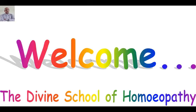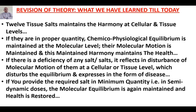Up till now we have finished 9 remedies from the 12 tissues. We have learned the theory of Schussler — very simple: at the cellular and tissue level, if the equilibrium of inorganic tissue salts and their molecular motion is maintained, the body remains in a state of health. If that equilibrium is disturbed, disease develops. Giving the specific salt restores molecular motion and the patient returns to health.